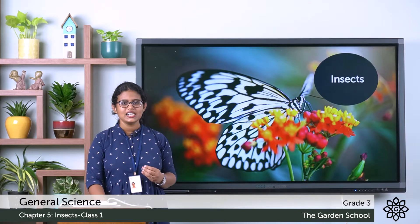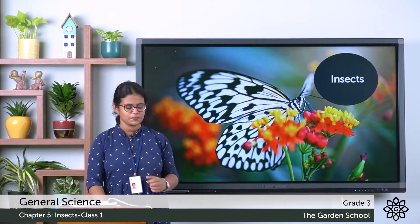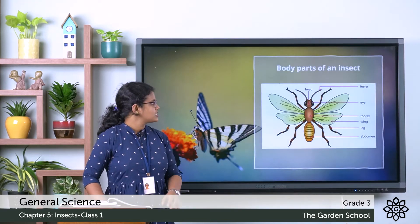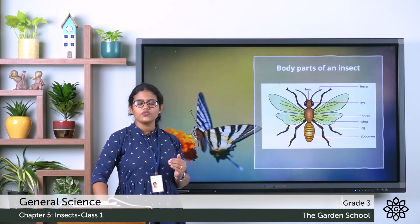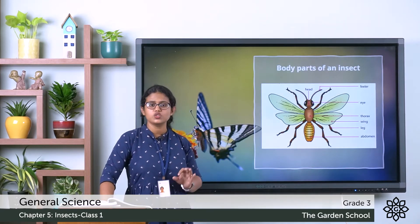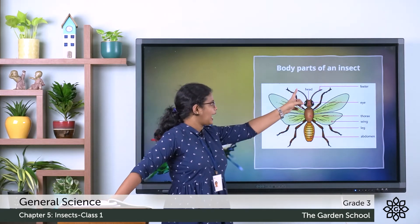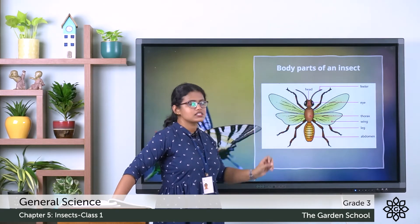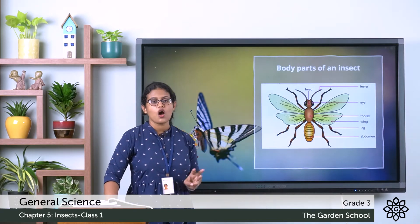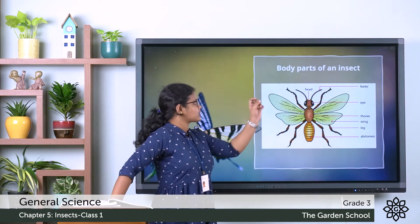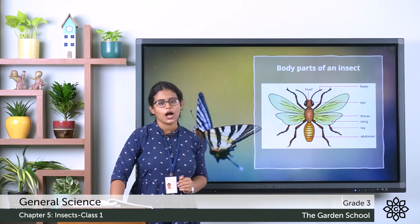Today we will discuss about the body parts of an insect. Here you can see the picture. The body of an insect is divided into three main parts. Do you know which are they? That is the head, thorax, and abdomen — these are the three main parts of the insect's body.